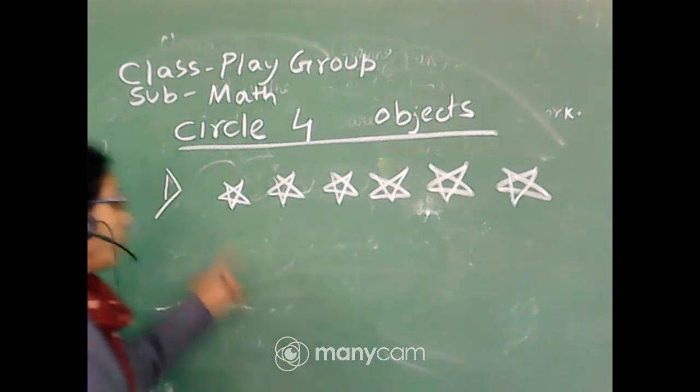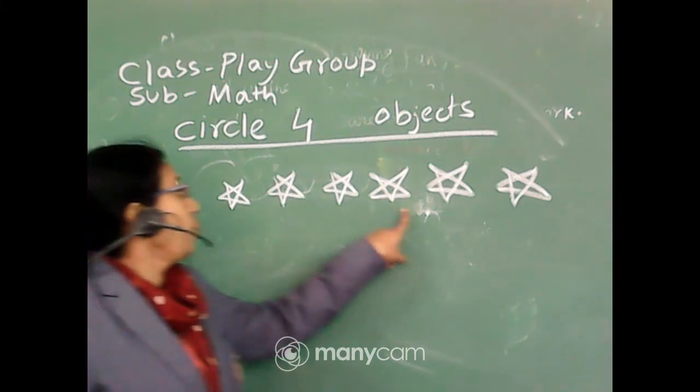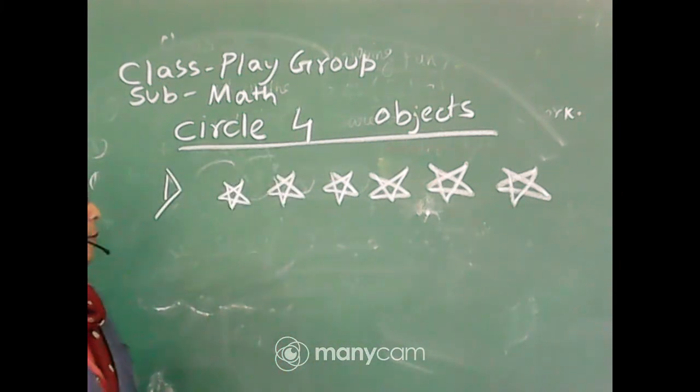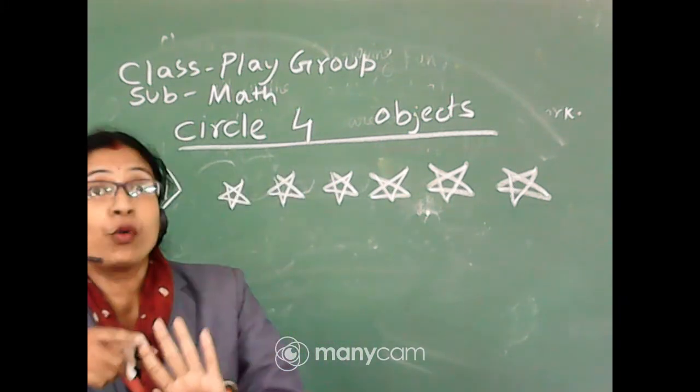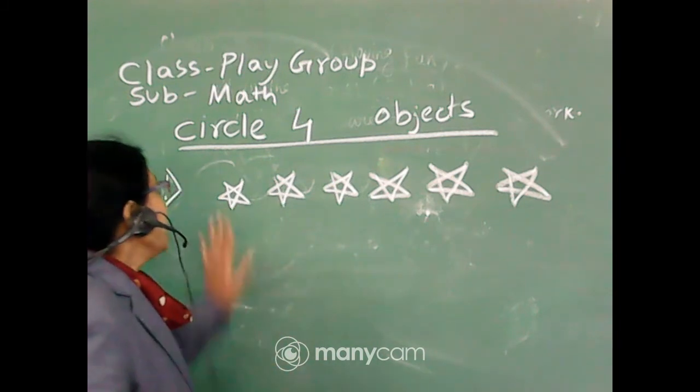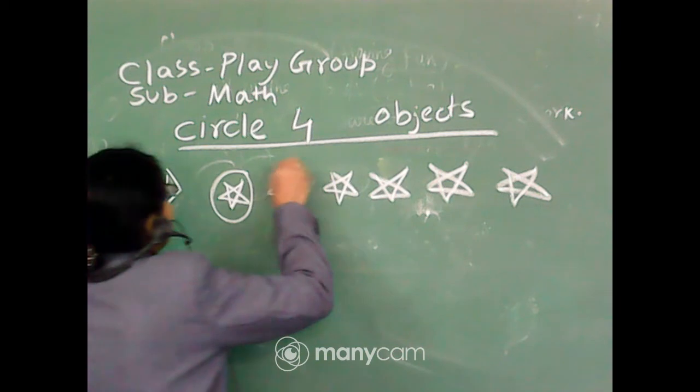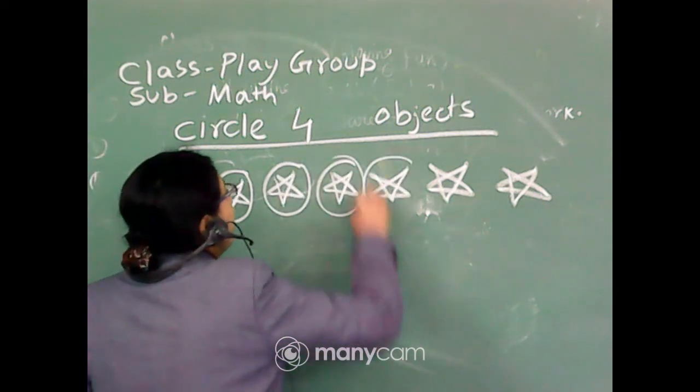How many stars are there? One, two, three, four, five, six. Six stars are there. But we have to circle only four. One, two, three, four. So we just circle one, then two, then three, then four. This way we only circle four objects.